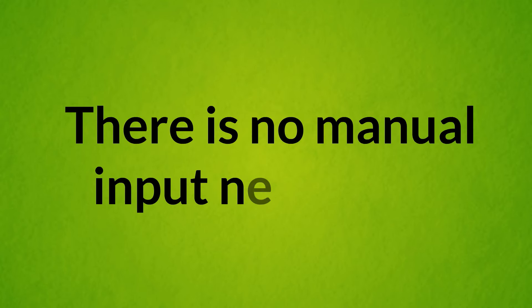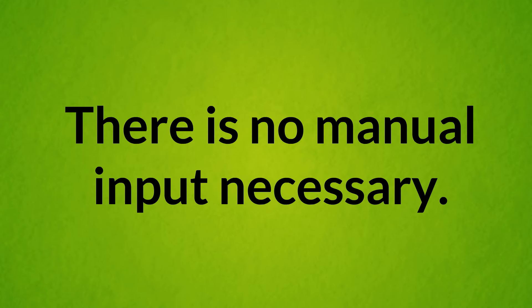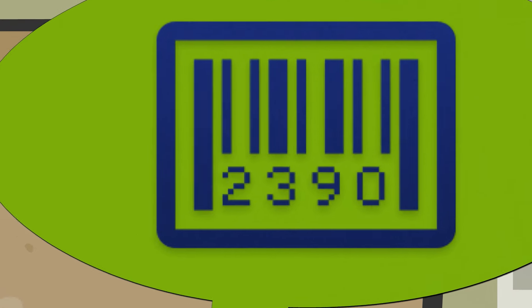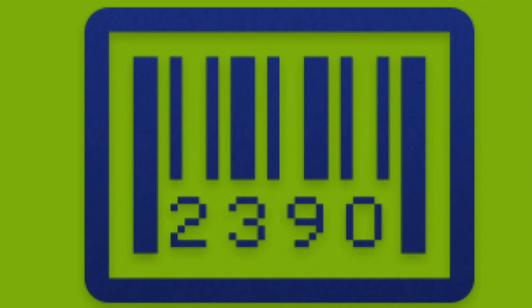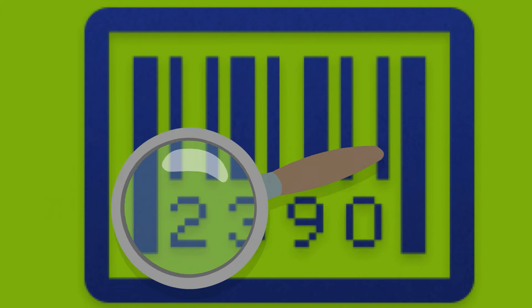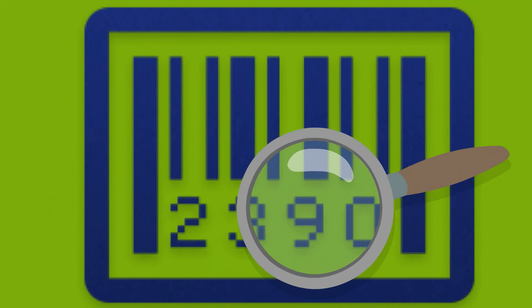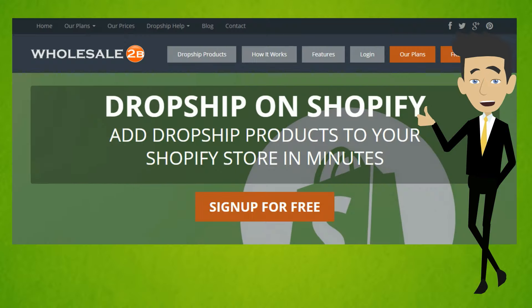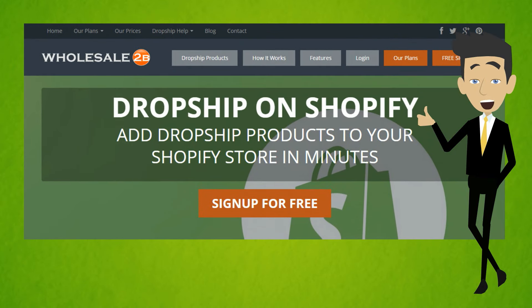There is no manual input necessary. When the order is shipped, Wholesale2Be will automatically push the tracking code back to your store for you. It really is that simple.